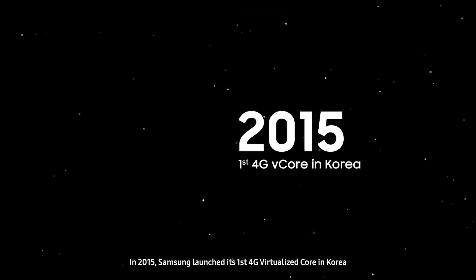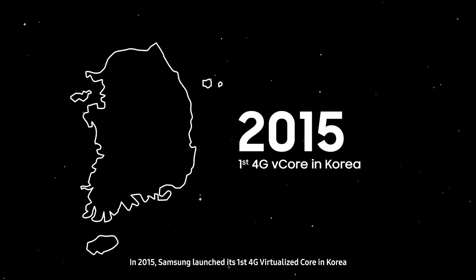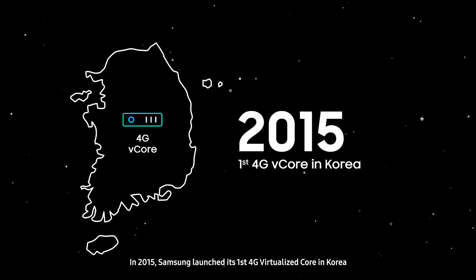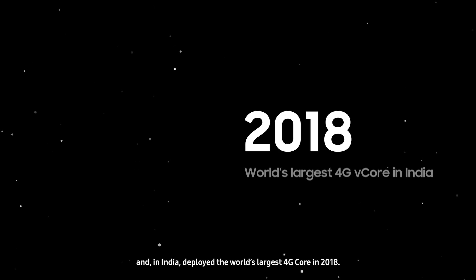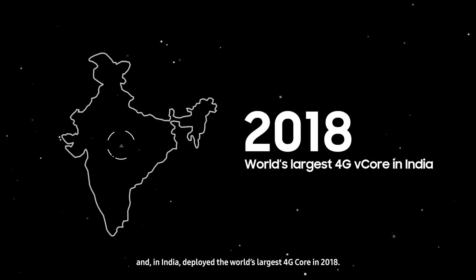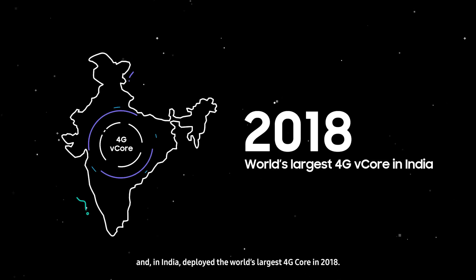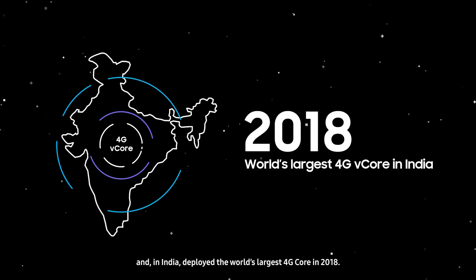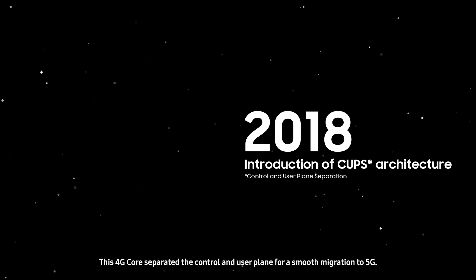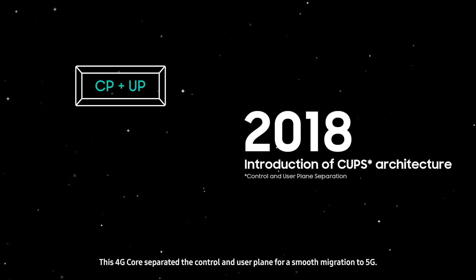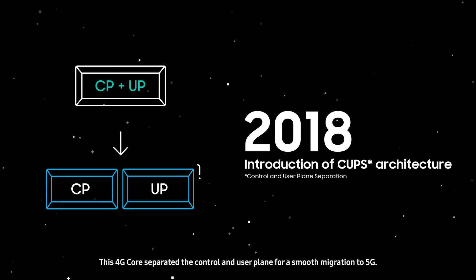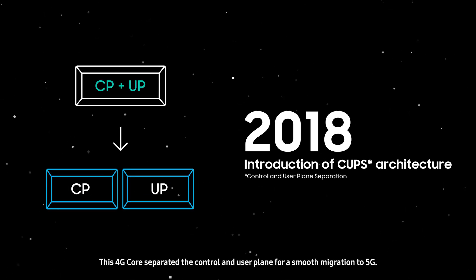In 2015, Samsung launched its first 4G virtualized core in Korea. And in India, deployed the world's largest 4G core in 2018. This 4G core separated the control and user plane for a smooth migration to 5G.